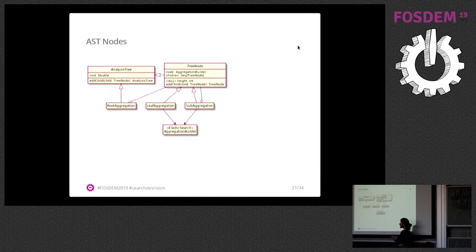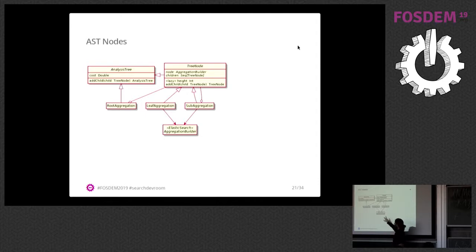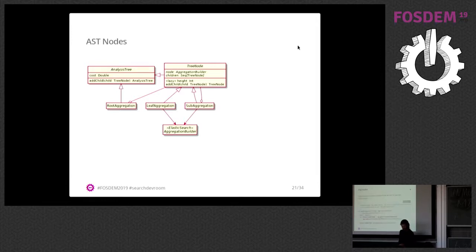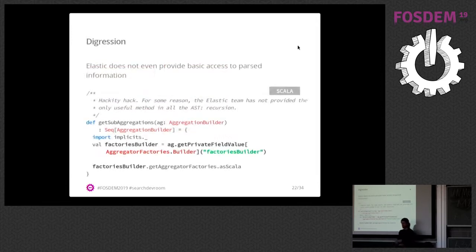The AST nodes are pretty basic — the interfaces are just those of a tree. There's a root aggregation which aggregates all nodes, and sub-aggregations follow a classic composite pattern with multiple sub-aggregations down to leaf nodes. Each sub-aggregation has a reference to the node that Elasticsearch parsed from the query, from which we get the parameters. However, Elasticsearch does not directly provide this facility to plugins — we needed to change the visibility of some fields which are private and do not have getters.